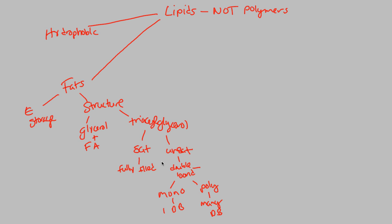We also talked about the idea of saturated versus unsaturated fats. Saturated fats — think butter. Butter is usually solid at room temperature because it's fully filled, in terms of the carbon skeleton, with hydrogens. The hydrocarbon tail is saturated with hydrogens — that's where the name comes from. Whereas unsaturated fats, we always consider these the healthy fats.